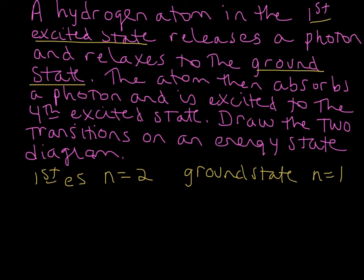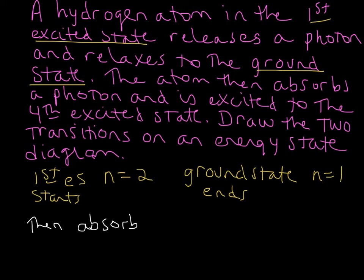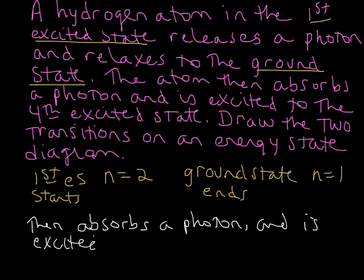So that is our hydrogen atom releasing a photon. It starts at n equals 2 and ends in the ground state. Then it's going to absorb a photon and be excited to the fourth excited state.